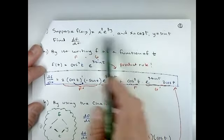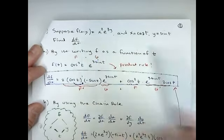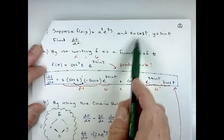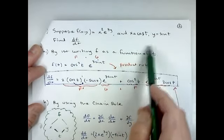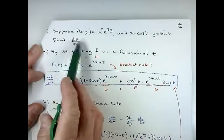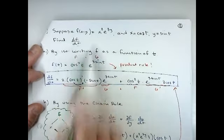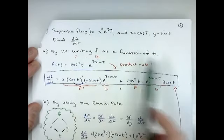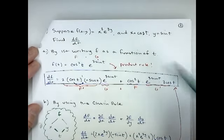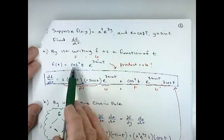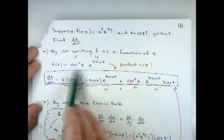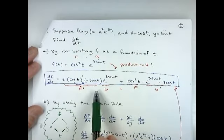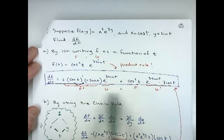You can do this one by first writing f as a function of t — just substitute cosine in for x and sine in for y, getting a function strictly of t, and then take the derivative with respect to t using the product rule. Make sure you know how to do it that way. But let's talk about the advantage of the chain rule approach.